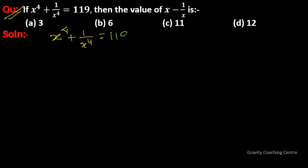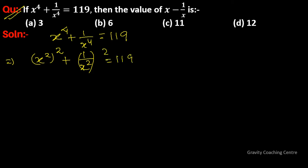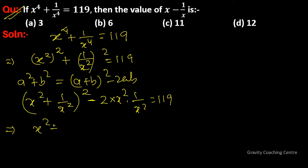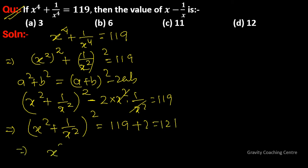Given x⁴ + 1/x⁴ = 119, we rewrite x⁴ as (x²)² and apply the identity a² + b² = (a + b)² - 2ab. So (x² + 1/x²)² - 2·x²·(1/x²) = 119, which gives (x² + 1/x²)² = 119 + 2 = 121. Therefore x² + 1/x² = √121 = 11.